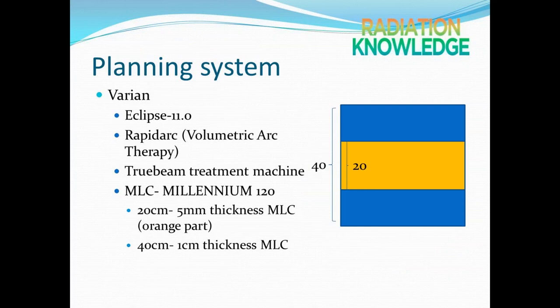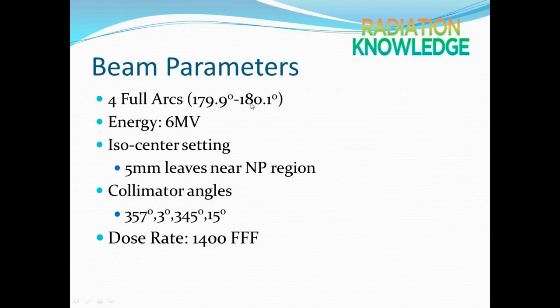Moving on to planning information. For this competition, we used Eclipse version 11. For our cases, we used RapidArc — we call it VMAT. The TrueBeam treatment machine has a 120-leaf MLC, with 5mm MLC leaves in the central 20 cm area and 1 cm thickness outside. The beam arrangement is 4 full arcs from 179.9 to 181 degrees, using 6MV energy and a dose rate of 1400 MU/min FFF.